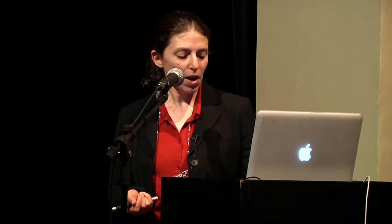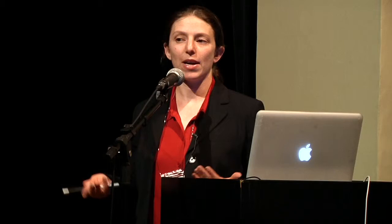In 1999, a heterozygous advantage in people who had HIV was described. People who are homozygous at the HLA at two or three loci progressed to disease much more rapidly than those who were heterozygous at all loci. We reported a very similar observation in the macaque model in 2010. We're still trying to understand whether this heterozygous effect can be attributed to mounting a broader set of CD8 T cell responses or simply being more likely to get the right T cell response. But it's a very provocative observation that heterozygosity prolongs disease course and homozygosity accelerates it.